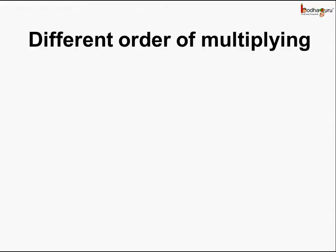Now let's multiply the numbers in different order and see if the result is the same. Three multiplied by minus 4 — here we are multiplying a positive number by a negative number. So the answer would be a negative number: 3 multiplied by minus 4.